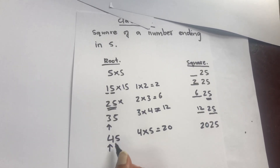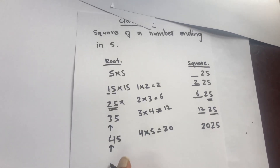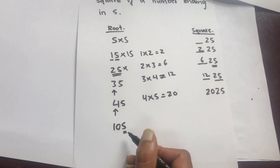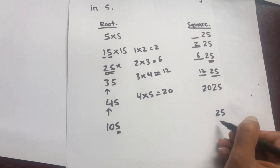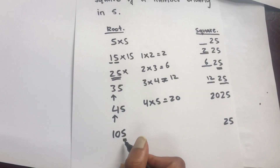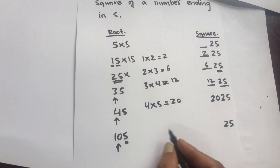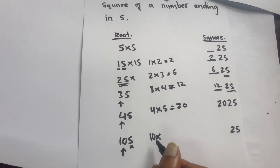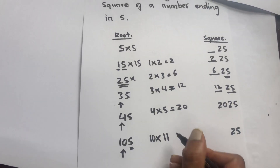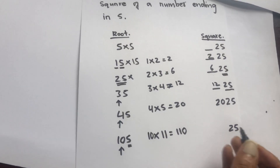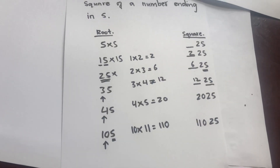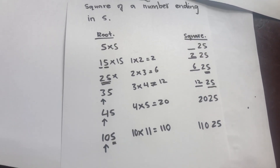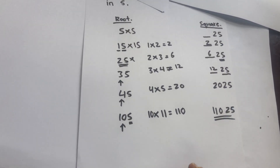Now for a three-digit example: 105. Again, the number ends with 5 so the last two digits are 25. The number in front of 5 is 10. Multiply 10 by one greater than 10, which is 11: 10 into 11 equals 110. So the square of 105 is 11,025. This is the principle.